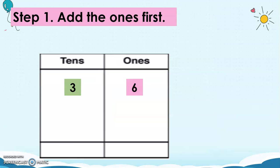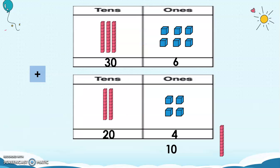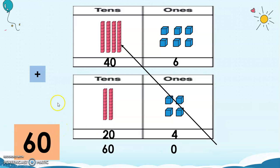And again, add the ones first. 36 plus 24, 6 plus 4 is 10. Now again, we cannot just leave 10 here. So what we're going to do is to regroup this one rod. So this one will be here in the tens place already. So what we're going to do is just write 0 and then regroup here in the tens place. So now, 30 will become 40. And 40 plus 20, we will have 60. So the answer is 60.